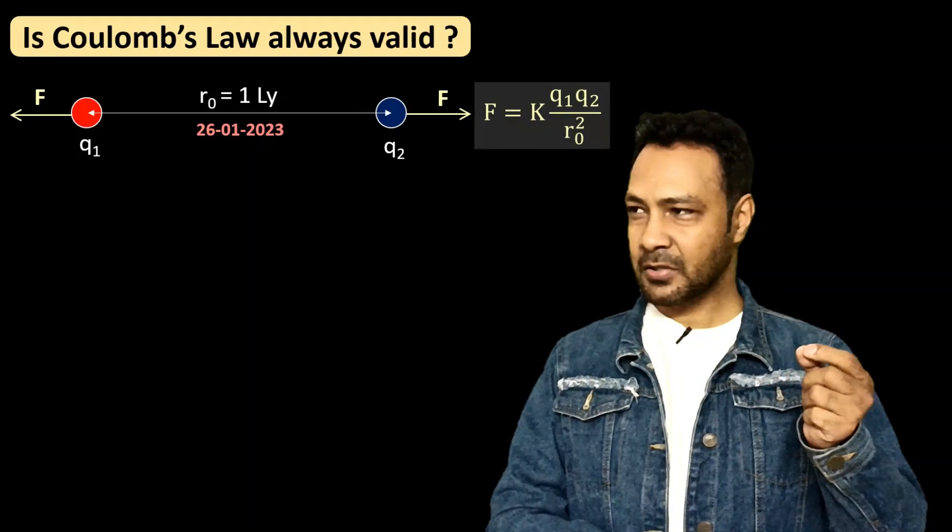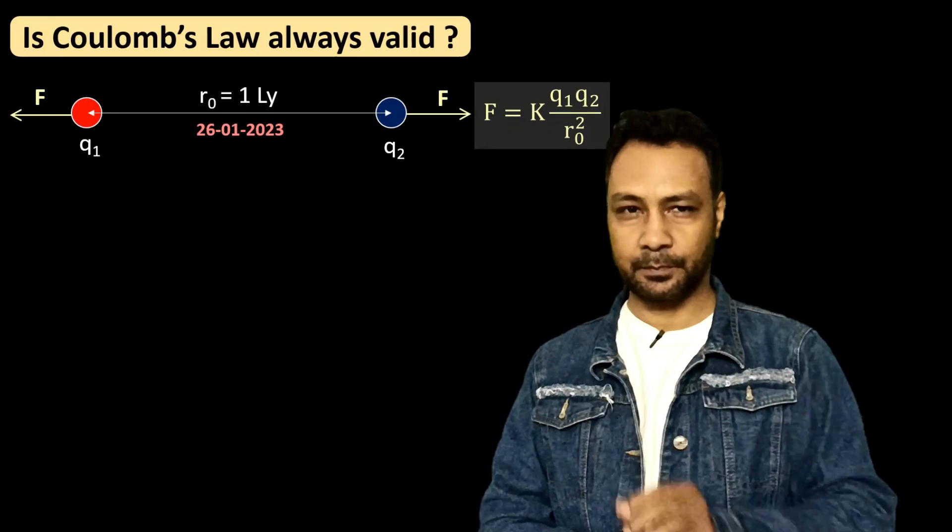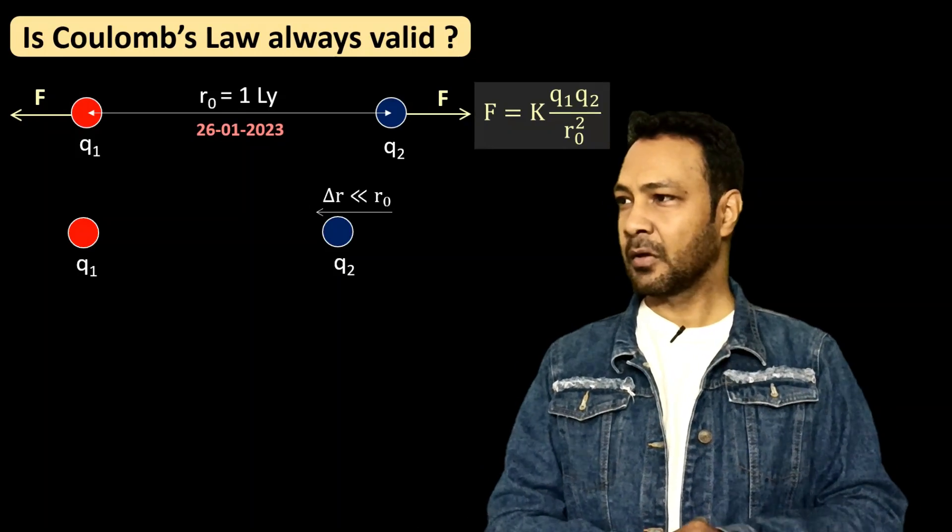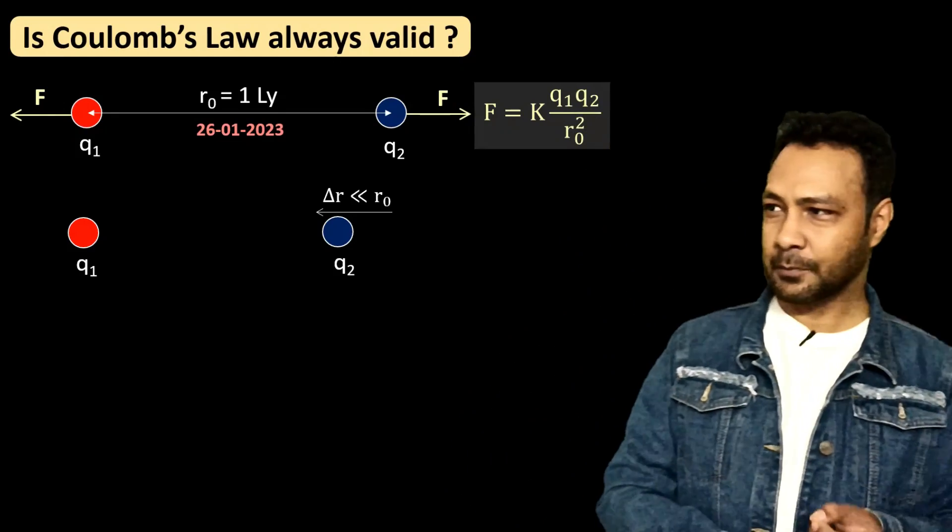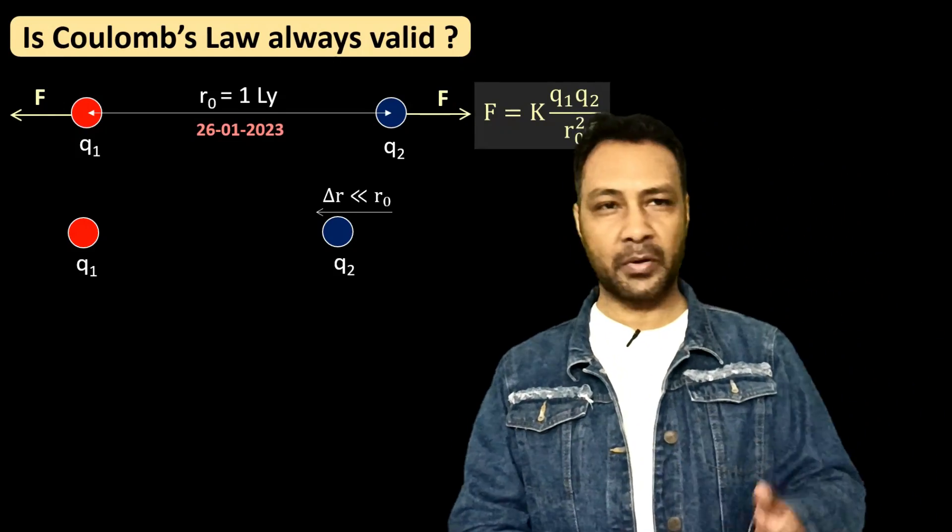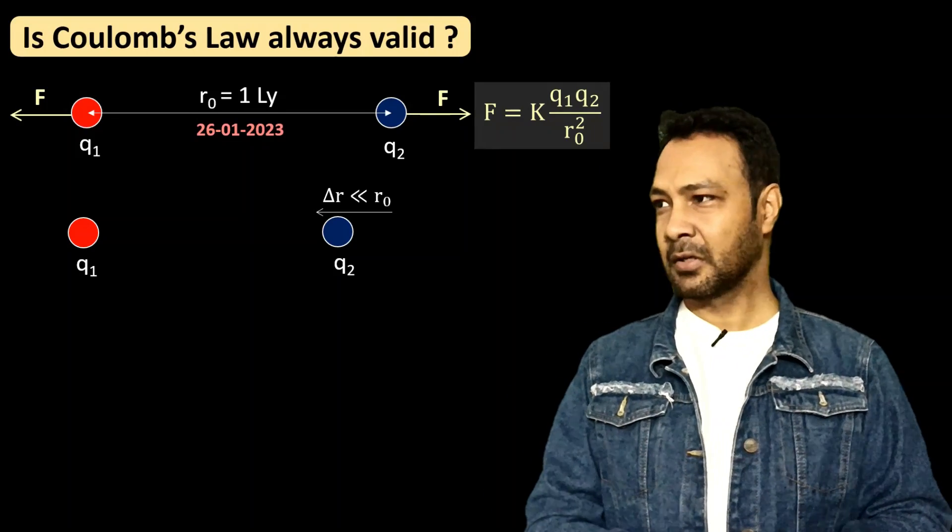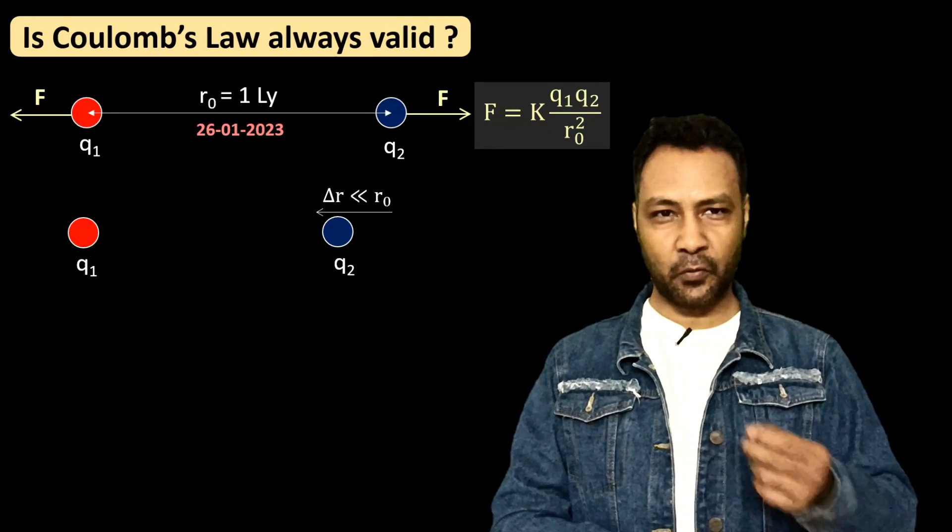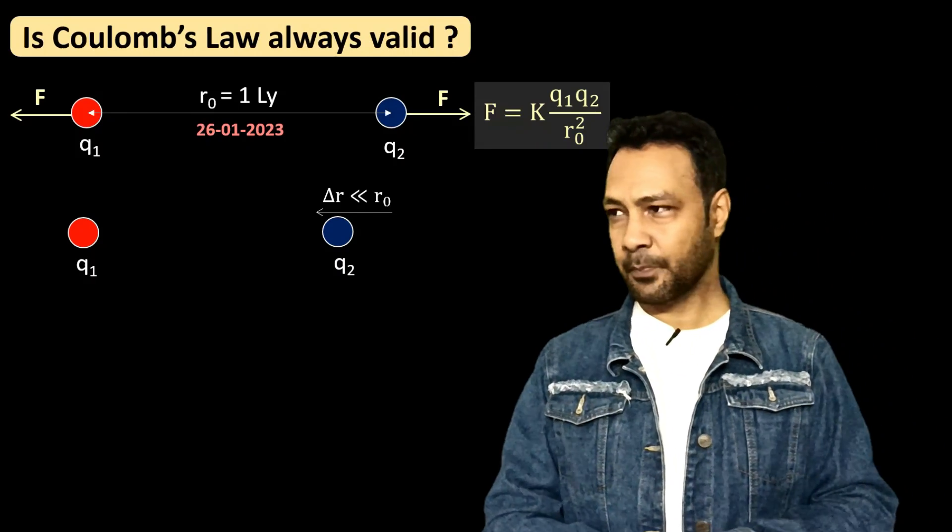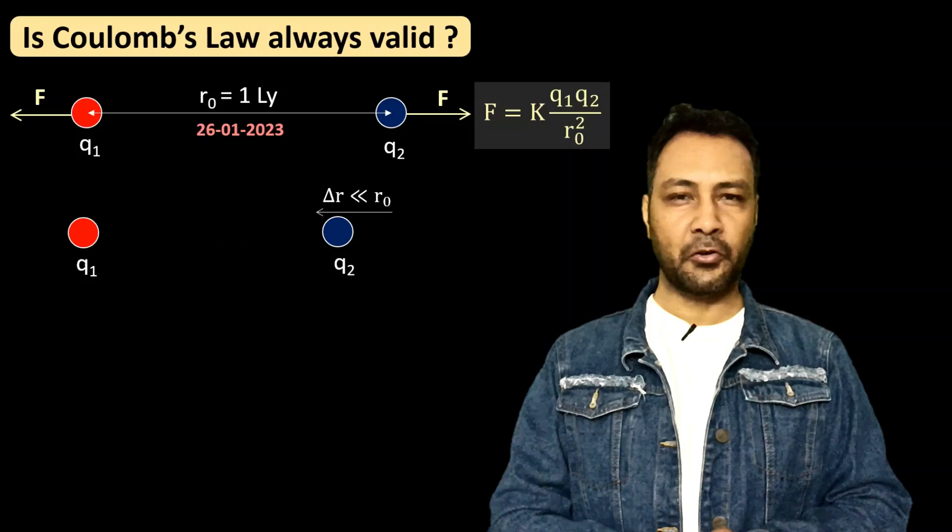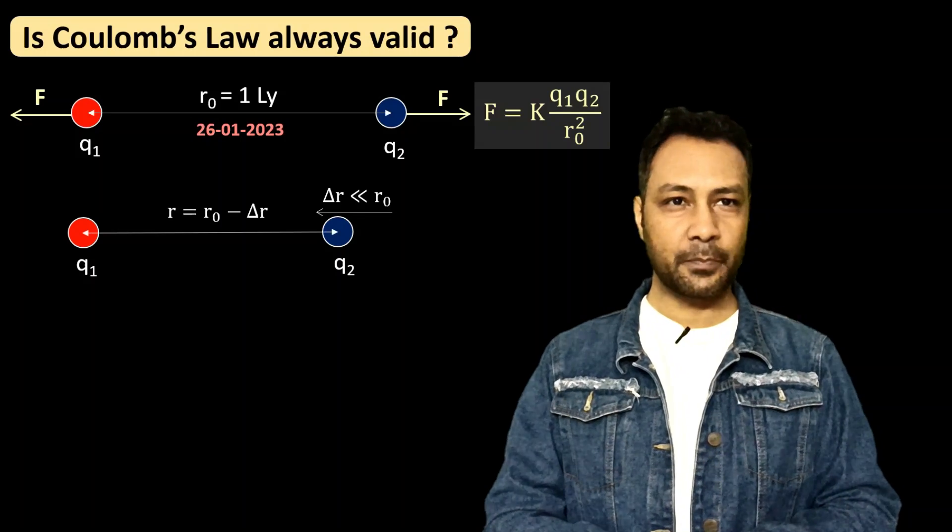Now what I do, I want to just displace q2 a little bit towards q1 right now at this moment. So I have displaced q2 very little, Δr, very small in comparison to original distance r₀. So I perform this operation almost immediately, say in few seconds or few minutes. So the new separation has reduced.